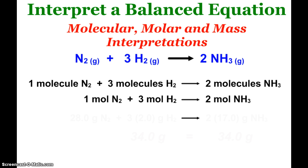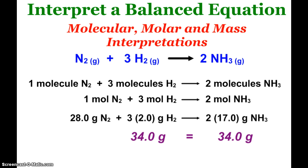On the mass level, I can prove the law of conservation of mass by using the molar masses from the periodic table. And I get 28 grams of nitrogen plus 6 grams of hydrogen. So I have 34 grams of reactants, and I get 34 grams of products.